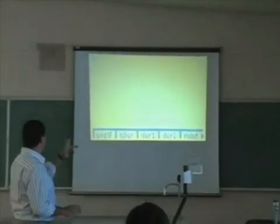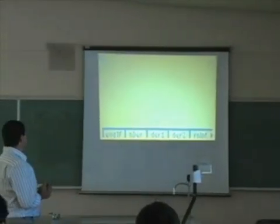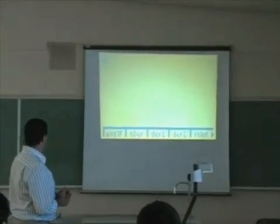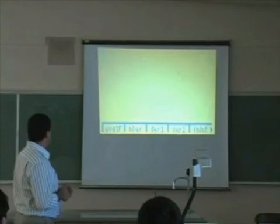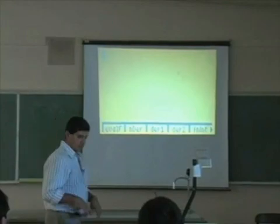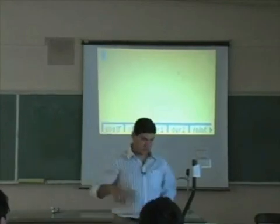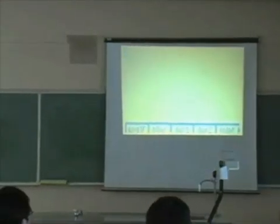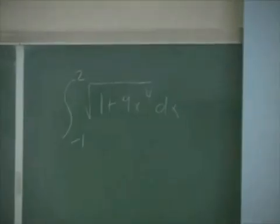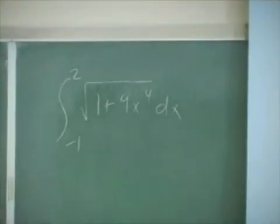Where we left off the other day, we remember we were going to put the integral and find out the distance that the particle traveled. So that one was our integral: negative one to two of the square root of one plus nine x to the fourth dx.